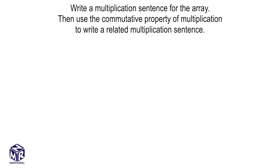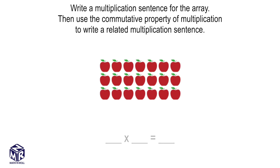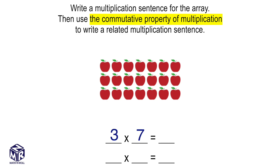Let's take a look at an example. Write a multiplication sentence for the array, then use the commutative property of multiplication to write a related multiplication sentence. In this array, we have 3 rows and 7 columns, so we can write our multiplication sentence as 3 times 7 equals 21.